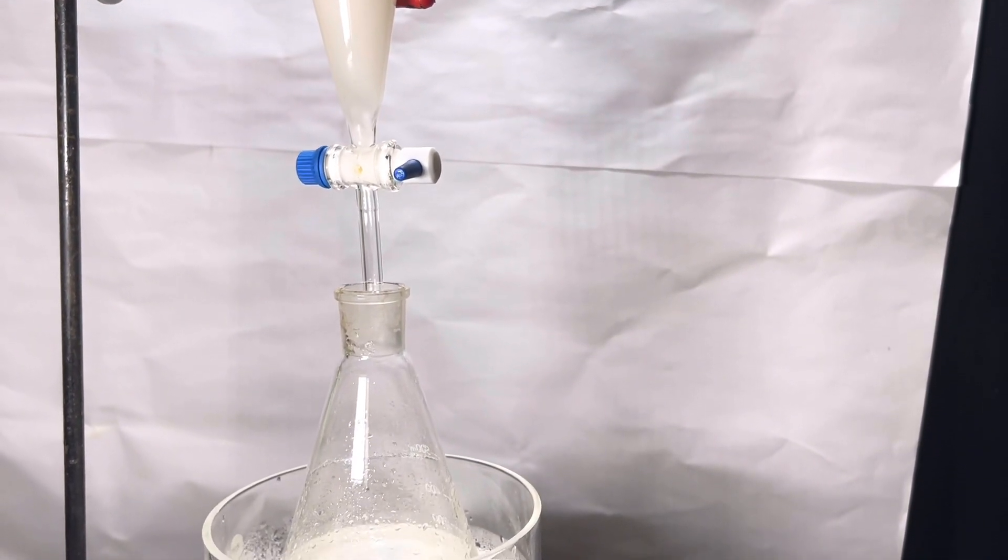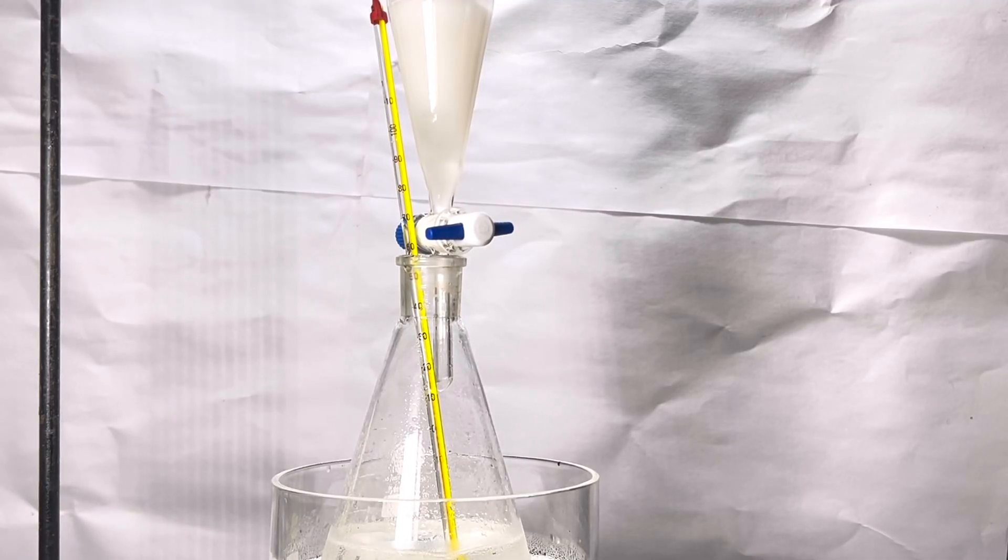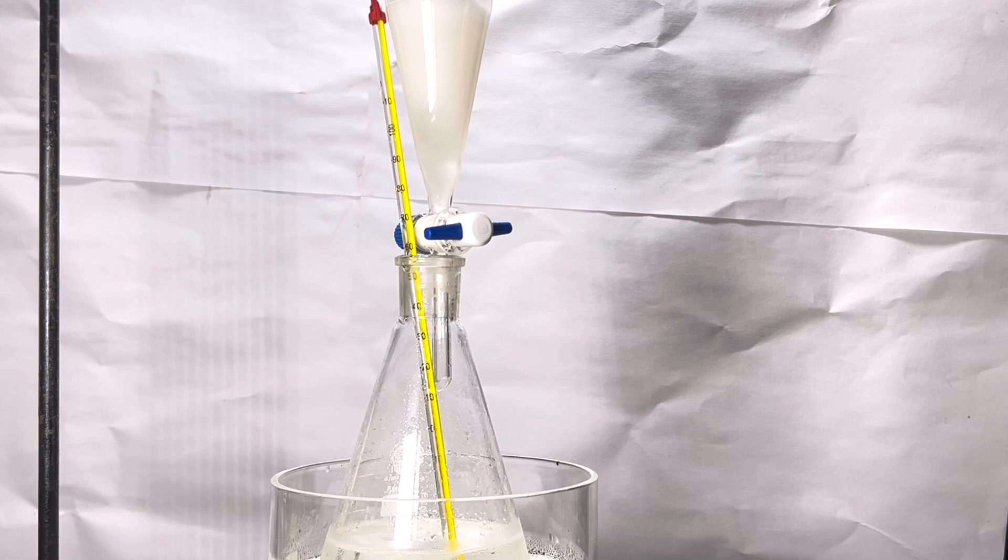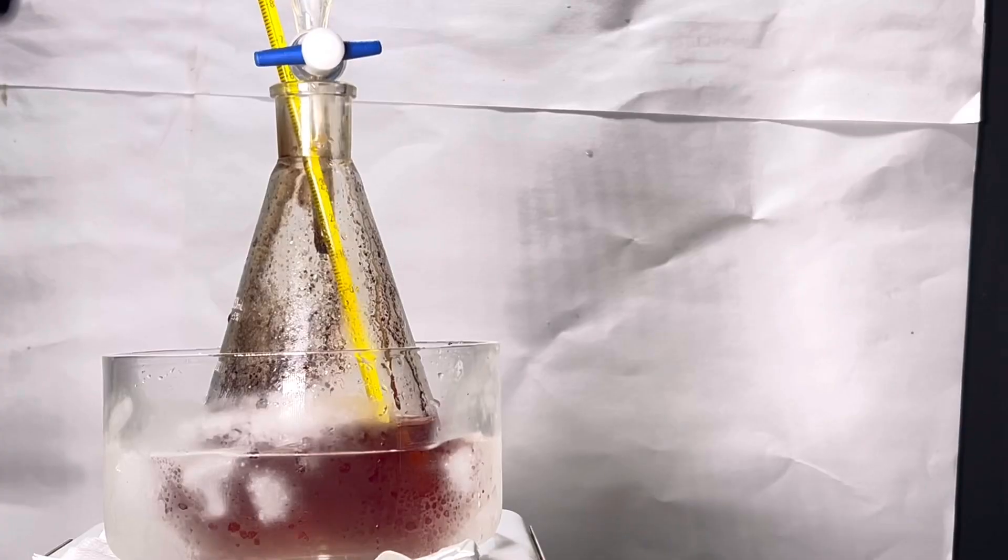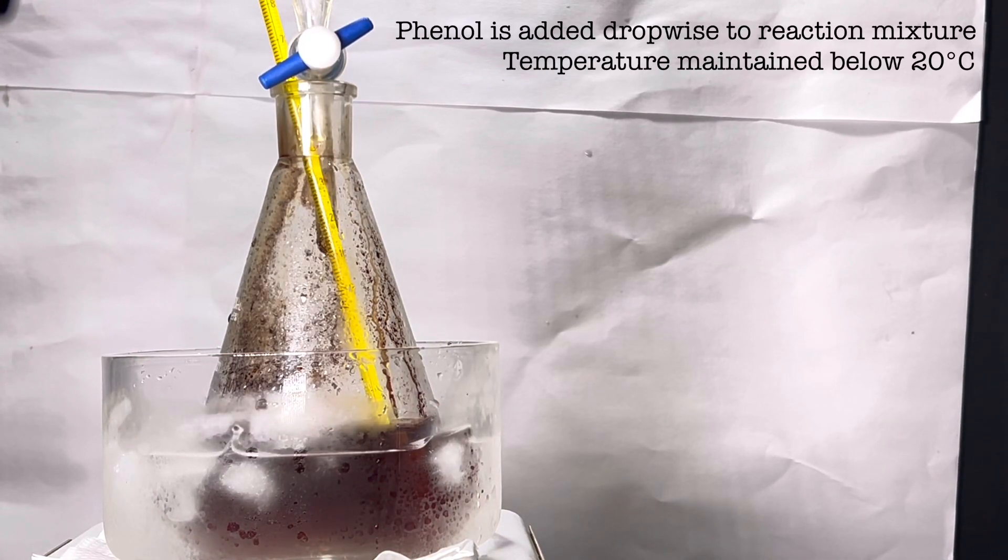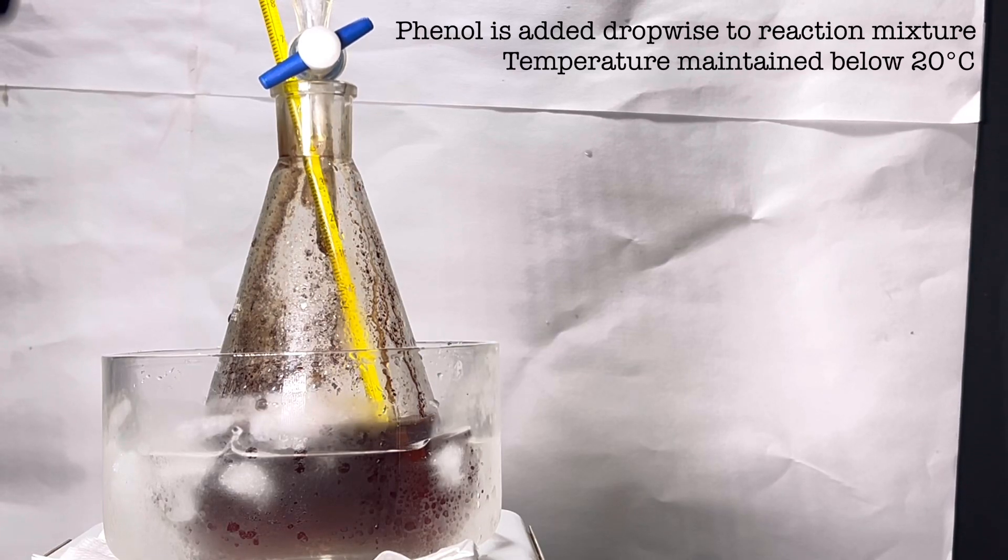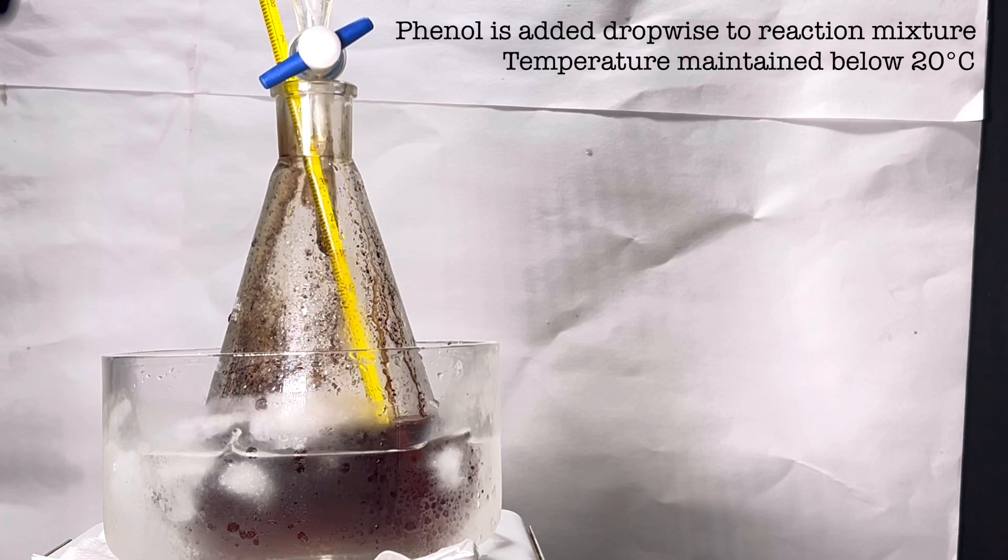The separatory funnel was placed on top of the acid mixture and the ice bath was kept during the whole time of addition of the phenol. A thermometer was also placed to monitor the temperature. Temperature should be kept below 20 degrees Celsius. Phenol is dripped slowly and you can see the color inside the flask is very dark red to almost black. The mixture was continuously stirred and the drip rate was adjusted from time to time.